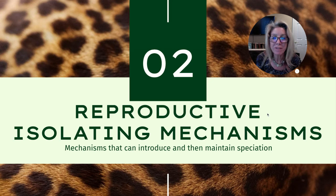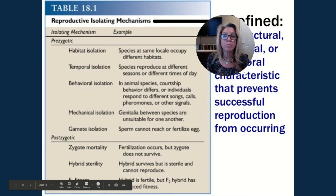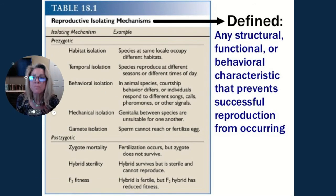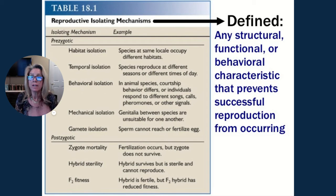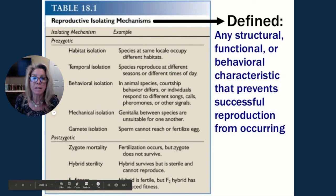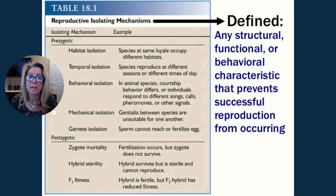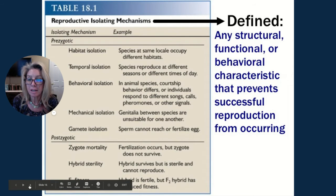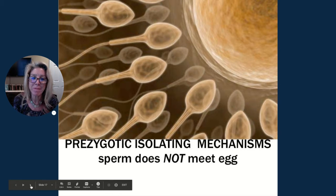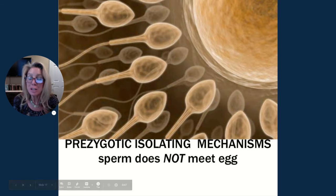Now let's look at the reproductive isolating mechanisms, broken down into two categories: prezygotic — everything up to just before forming a zygote — and postzygotic — starting from the zygote. These are structural, functional, or behavioral characteristics that prevent successful reproduction. The first prezygotic mechanism is habitat isolation: species at the same location occupy different habitats, and the sperm is not going to meet the egg.